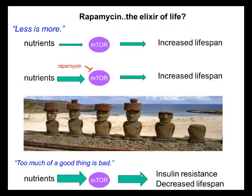Paradoxically, inhibition of mTOR can also lead to insulin resistance, since mTOR plays a central role in the insulin signal transduction pathway. So the question is: how can inhibition of mTOR prolong life while promoting insulin resistance?